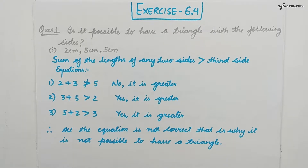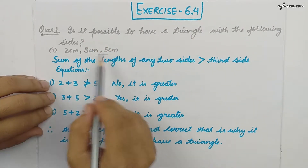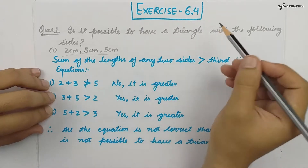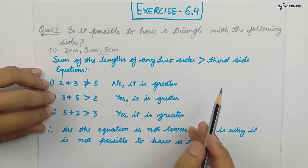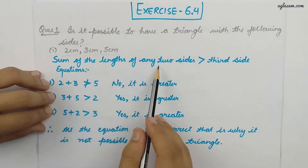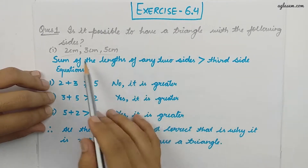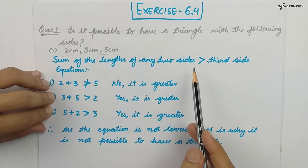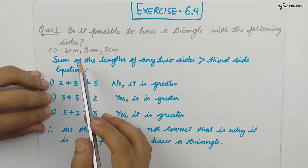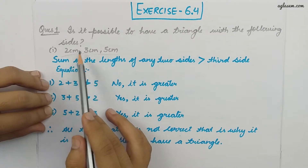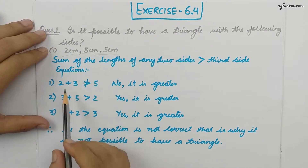The first question is: is it possible to have a triangle with the following sides? To find out whether it is a triangle or not, we have to see that the sum of the length of any two sides should be greater than the third side. If this statement is applicable, then it is a proper triangle. So we have to add every two sides and compare with the third side.